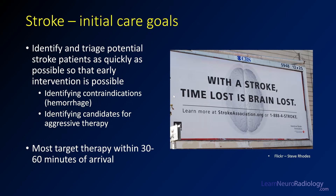The initial care goals of stroke are to identify and triage potential stroke patients as fast as possible so you can make an early intervention. You want to identify contraindications to treatment, particularly hemorrhage — you don't want to treat people with thrombolytic agents if they already have a hemorrhage. You want to identify candidates for aggressive therapy because the earlier you treat, the more likely you are to save brain. Most places are now targeting initial therapy within 30 to 60 minutes of arrival.